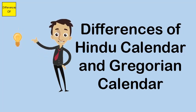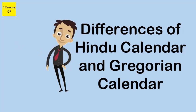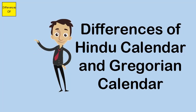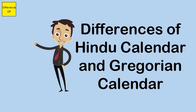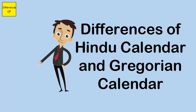The Gregorian calendar divides the day into 24 hours having 60 minutes each, while the Hindu calendar divides the day into 15 muhartas having 15 minutes each. The Gregorian calendar focuses mainly on Greek gods.